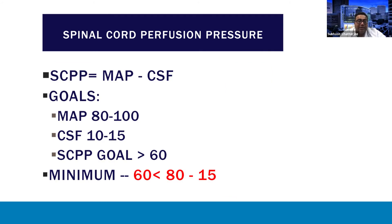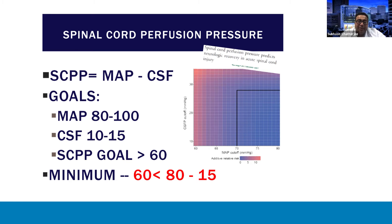The critical component to remember is the concept of spinal cord perfusion pressure, based upon a similar entity to cerebral perfusion pressure. This is the mean arterial pressure minus the cerebrospinal fluid pressure. Typically our goals are a MAP of 80 to 100 — preferably in the 90 to 100 range — a cerebrospinal fluid pressure of somewhere between 10 to 15, resulting in a spinal cord perfusion pressure goal of at least greater than 60. Maintaining a spinal cord perfusion pressure of about 60 puts us at lower risk of spinal cord complications.